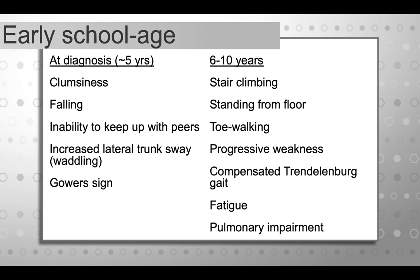Within a few years after diagnosis, the progressive weakness really starts to kick in. Kids with muscular dystrophy then have difficulty with stair climbing and getting up from the floor. Toe walking, a compensated Trendelenburg gait, and fatigue become prominent. There may also be some pulmonary impairment that begins to appear in that age group.